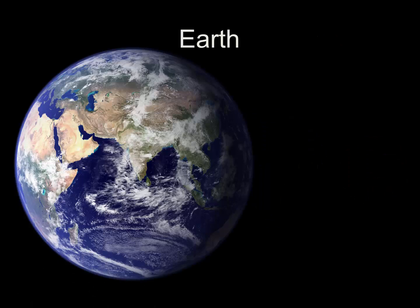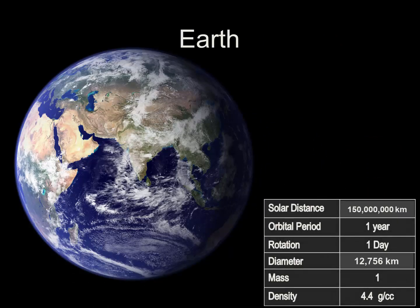Here's an absolutely gorgeous photograph of Earth taken from a satellite. A few of the details of Earth: we orbit the Sun at a distance of approximately 150 million kilometers. Since this number is so large, we come up with another way of measuring astronomical distance. We're going to say that Earth is one astronomical unit from the Sun. One astronomical unit is defined by the average distance between the Earth and the Sun. It takes one year, or 365 and a quarter days, for Earth to take a trip around the Sun.